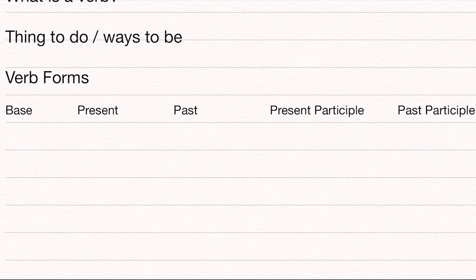Some of our verbs get really weird — like 'be,' for example. 'Be' has one base form; everything has one base form. But it has a lot of different present forms: is, am, are — three different present forms. Past: it has two forms. 'Be' is the only verb that has two forms in the past: was and were. Present participle — we don't use this one too much — being. And then our past participle is 'been.'